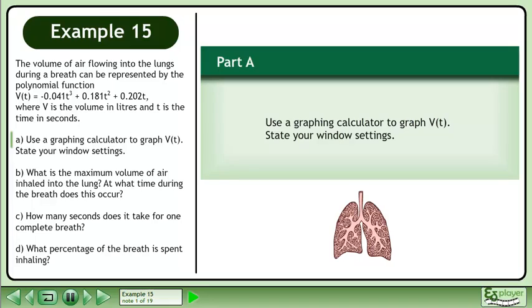The volume of air flowing into the lungs during a breath can be represented by the polynomial function V equals negative 0.041t cubed plus 0.181t squared plus 0.202t, where V is the volume in liters and t is the time in seconds.